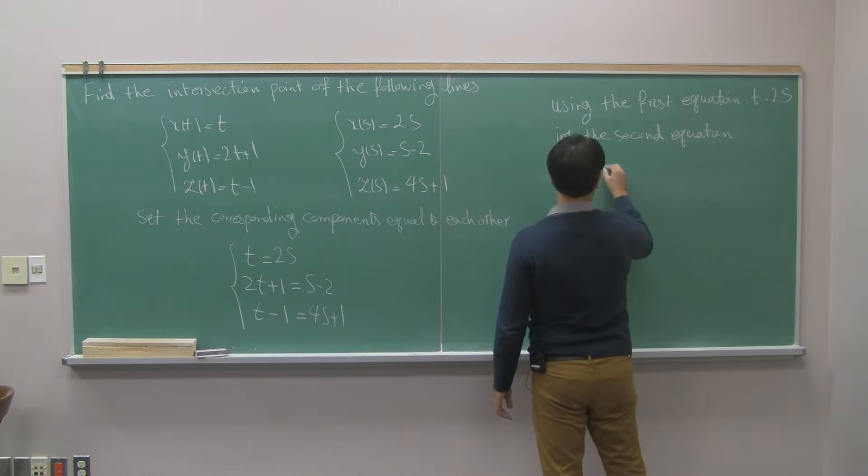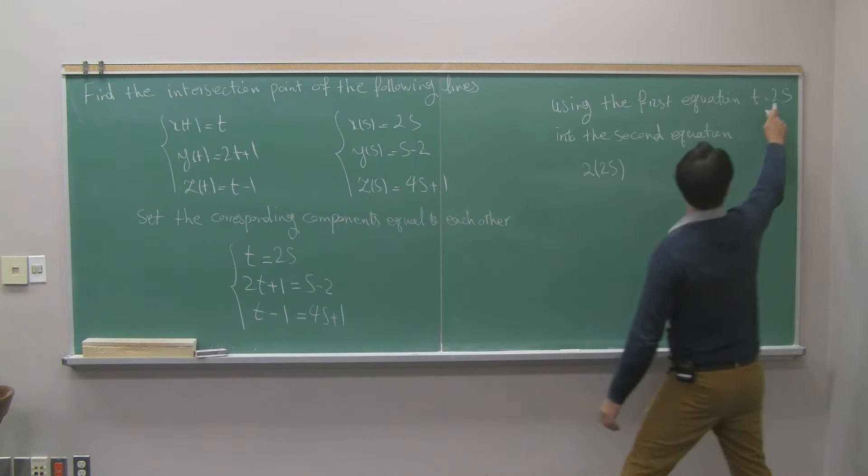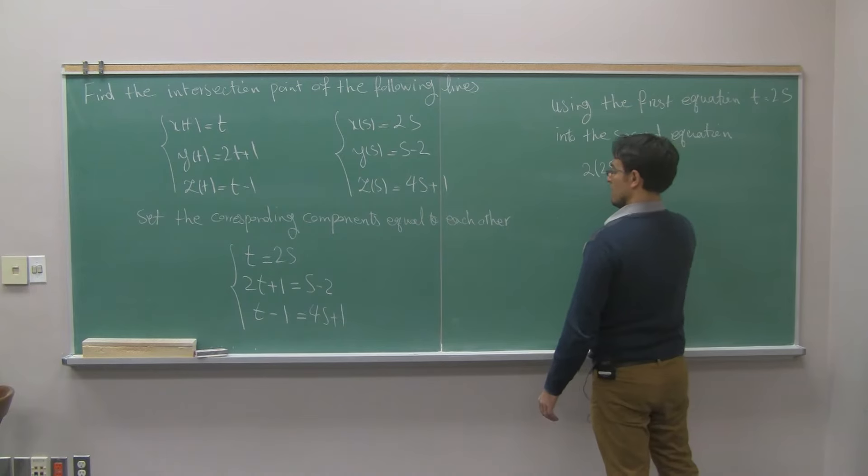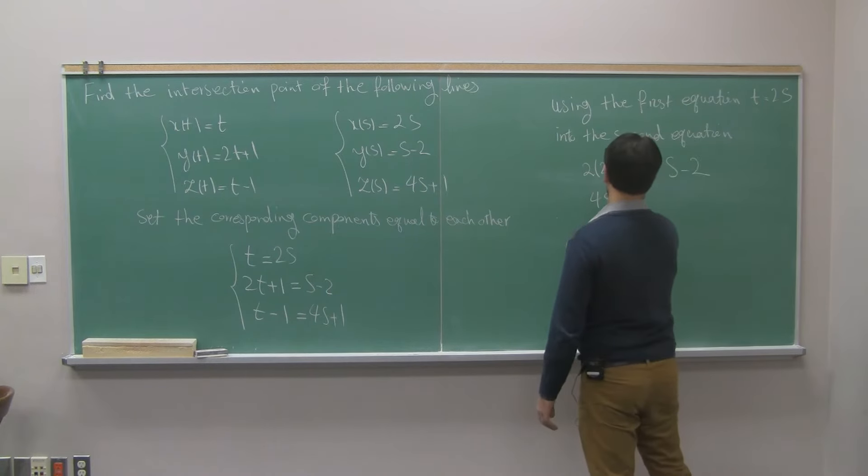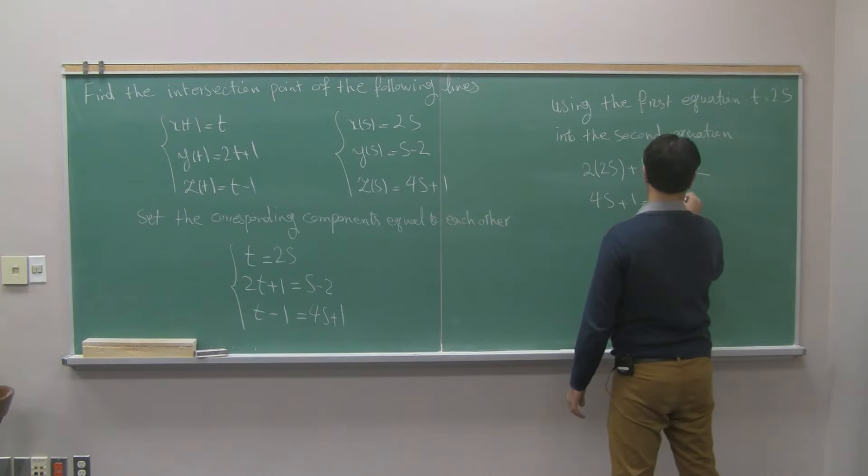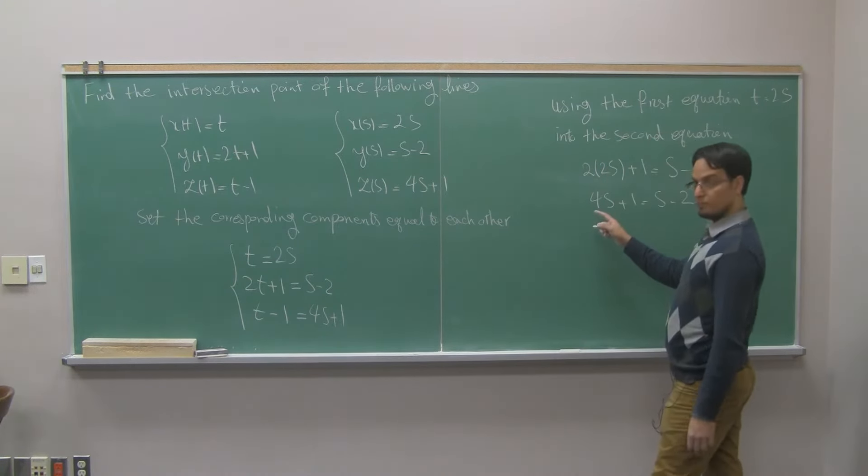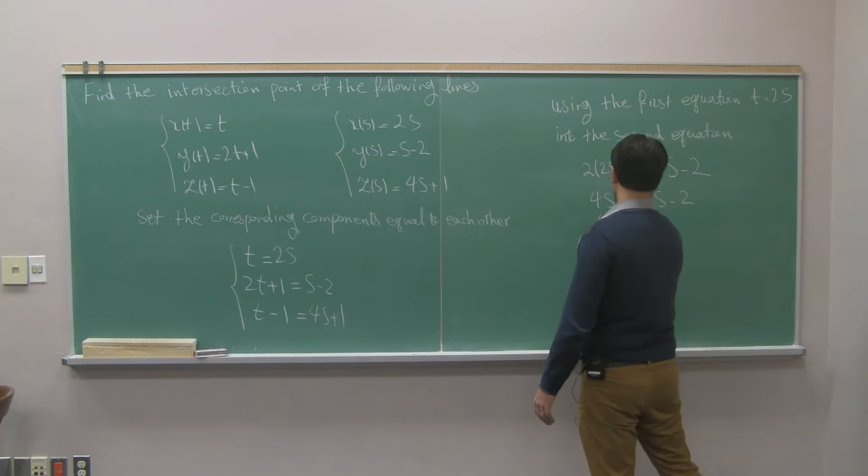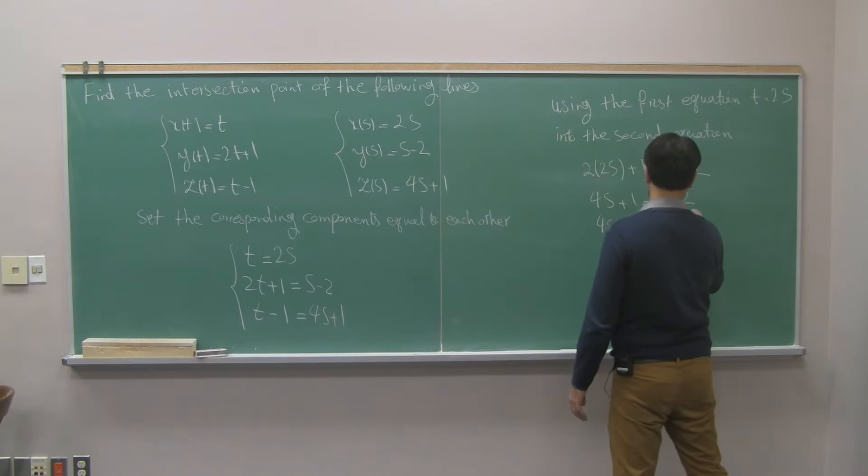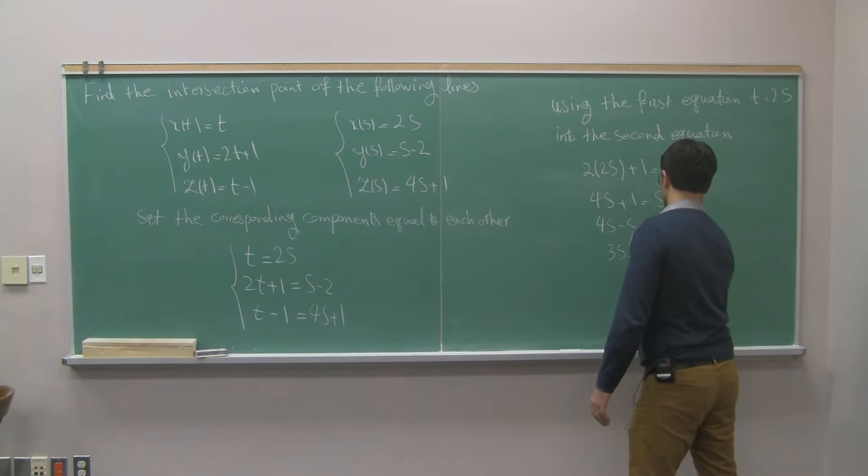So 2 times 2s. Wherever you see t plug in 2s, plus 1 is equal to s minus 2. I have 4s plus 1 equals to s minus 2. Bring variables one side constants to other side. 4s minus s equals to negative 2 minus 1. And this is 3s equals to negative 3.